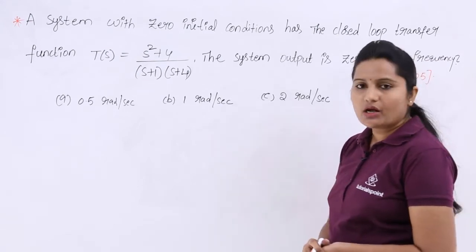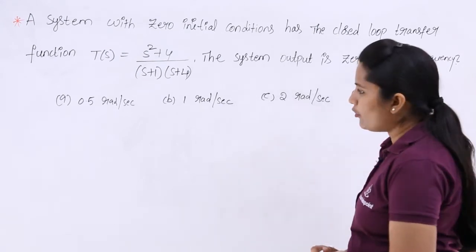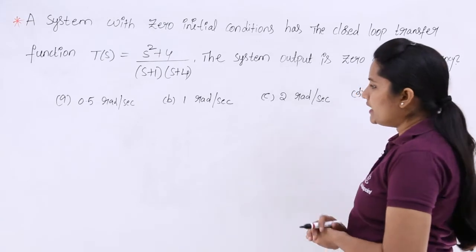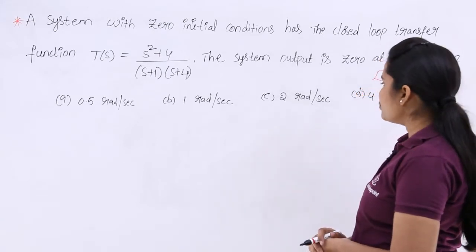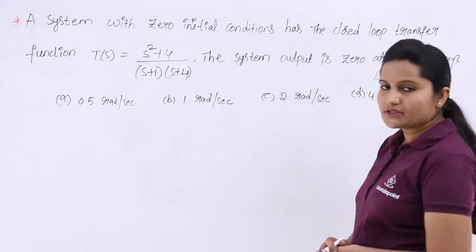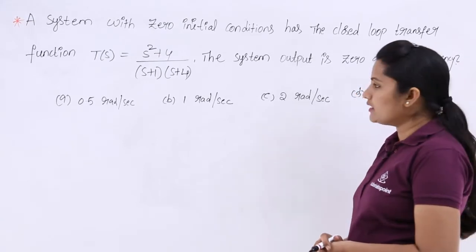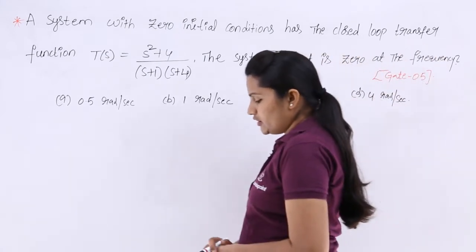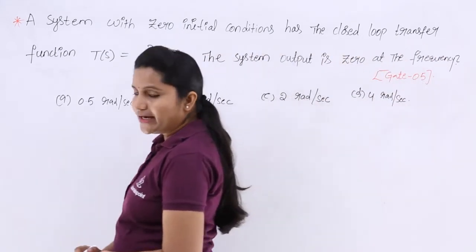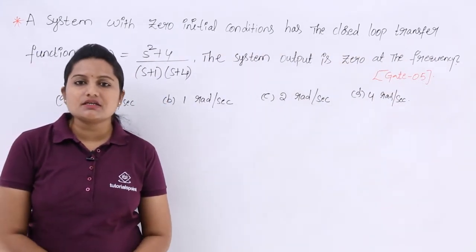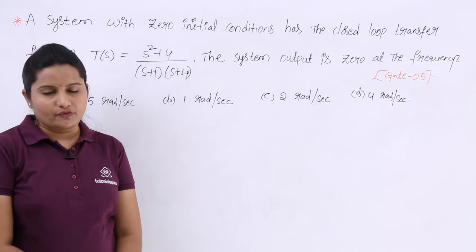They are asking at which frequency the system output is zero. The options given are: 0.5 radians per second, 1 radian per second, 2 radians per second, and 4 radians per second. We need to find out which one is correct.